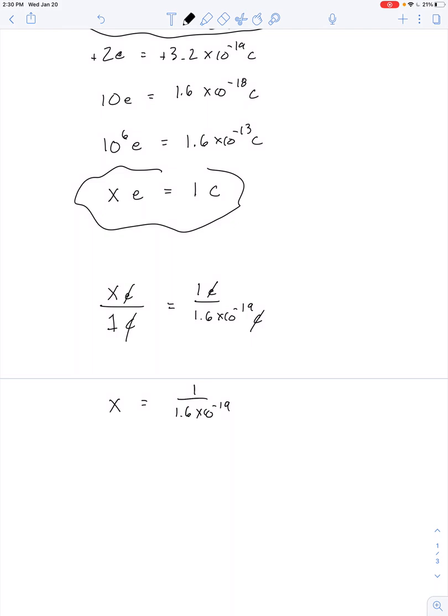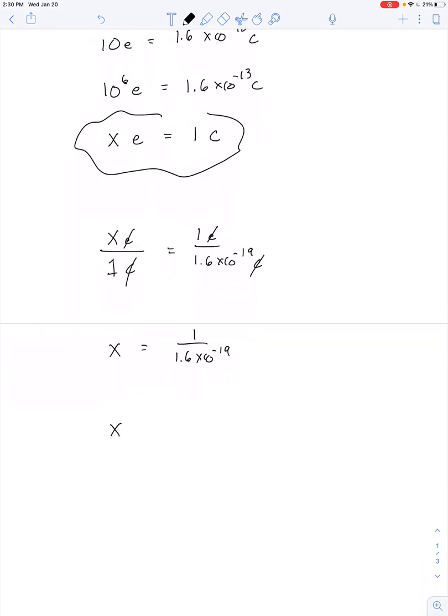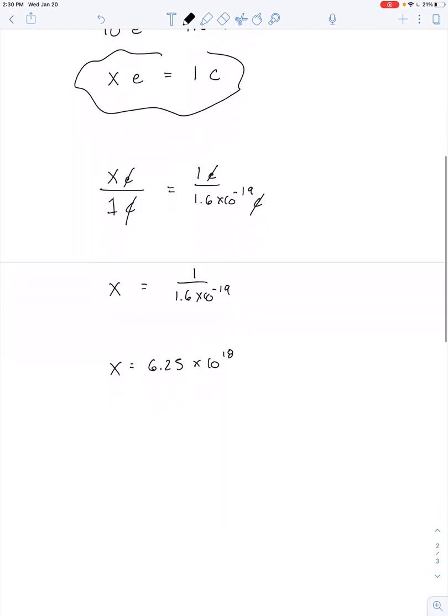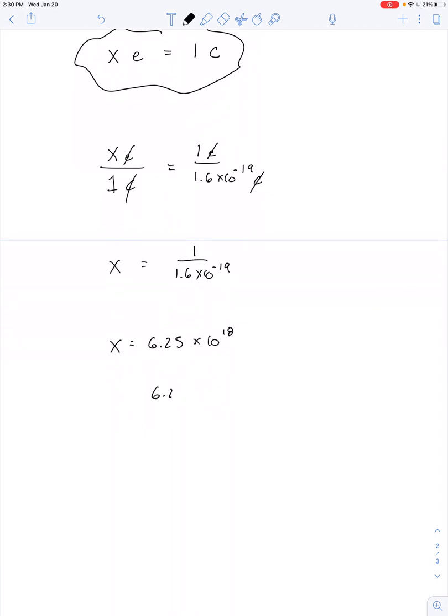So if you grab your calculator and see what that leads to, you find that x is equal to 6.25 times 10 to the 18th. We can think of that as 6.25 times 10 to the 9th times 10 to the 9th. So we would call this 6.25 billion billion.